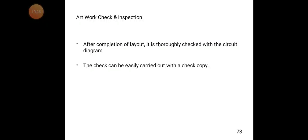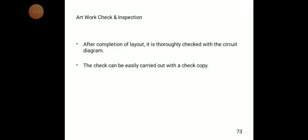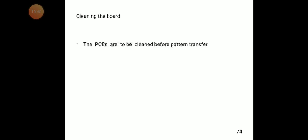After completing component polarity, we move to artwork check and inspection — verifying that the artwork we have done is properly drawn, with no mistakes. After completion of the layout, it is thoroughly checked against the circuit diagram to confirm the artwork replicates it correctly. The check can be easily carried out using a check copy. After that, we proceed to clean the board.